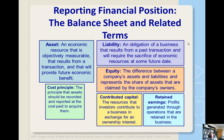A balance sheet reports a company's assets, liabilities, and equity. An asset is a resource of a business that's reported on the balance sheet. More formally, an asset is an economic resource that is objectively measurable, and that resource results from a prior transaction, and that resource will also provide future economic benefit. Those are the key requirements of an asset.